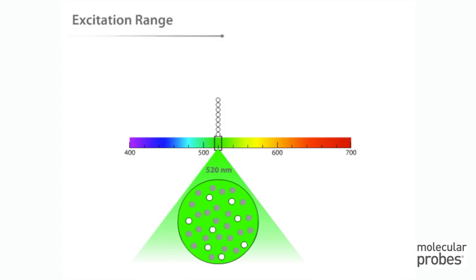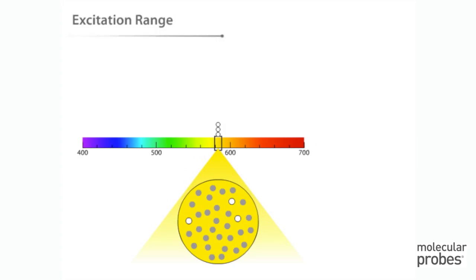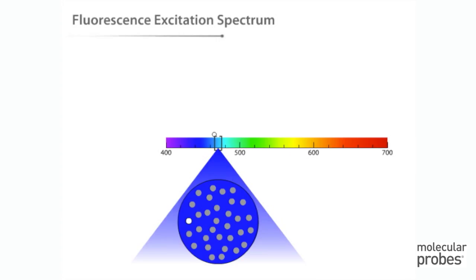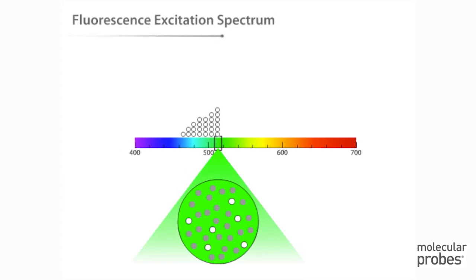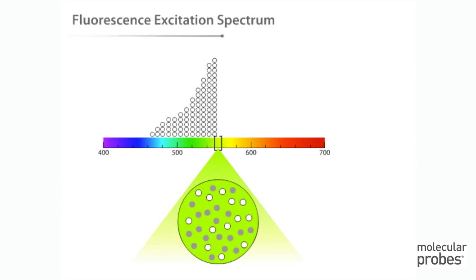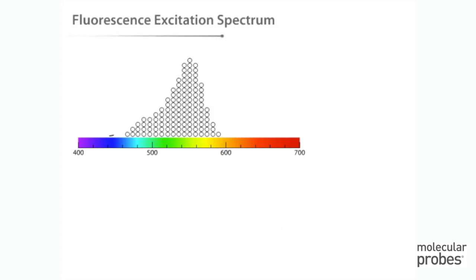For this particular dye, 550 nanometers is the wavelength that excites more fluorophores than any other wavelength of light. At wavelengths longer than 550 nanometers, the fluorophore molecules still absorb energy and fluoresce, but again in smaller proportions. The range of excitation wavelengths can be represented in the form of a fluorescence excitation spectrum, which looks like this.